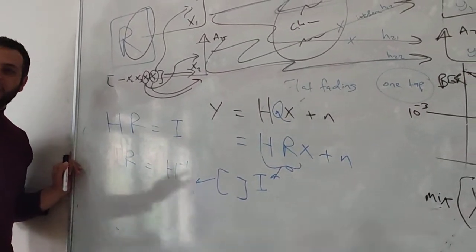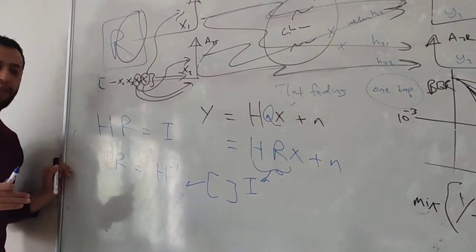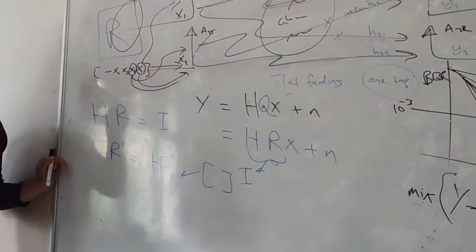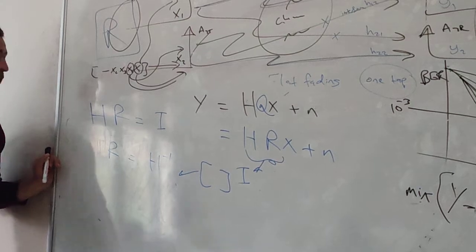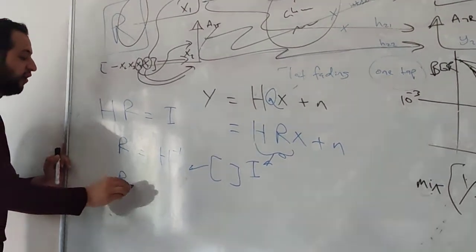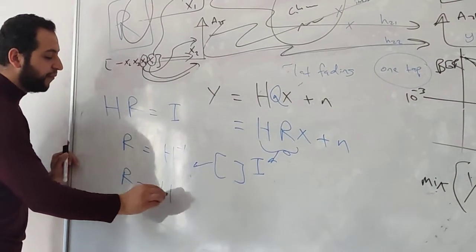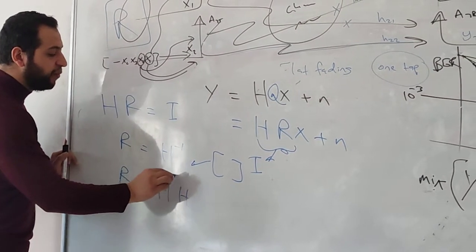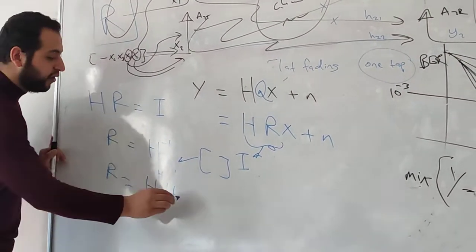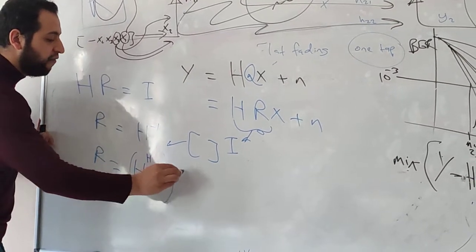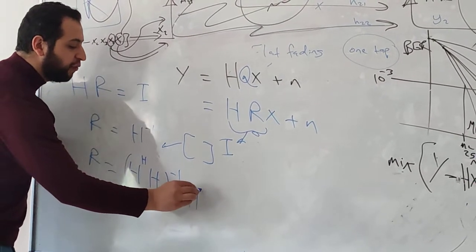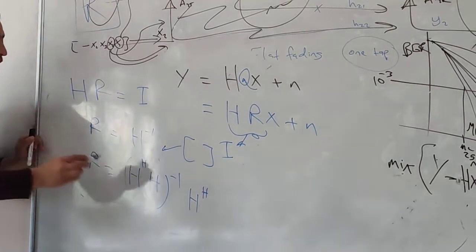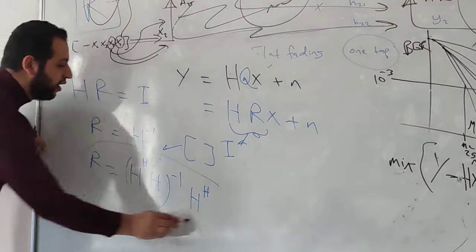We don't have a square matrix — mathematically, we don't have a square matrix, so you can't find the inverse. What's the pseudo-inverse? In this case, R should be something like H Hermitian multiplied by H, and this whole thing inverted, multiplied by H Hermitian — that is the pseudo-inverse.